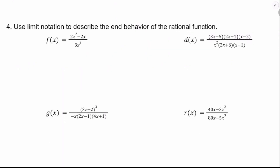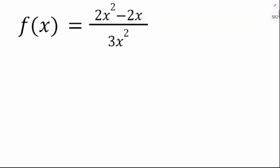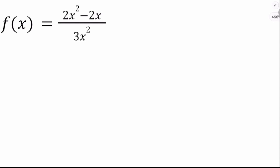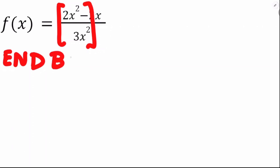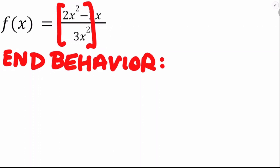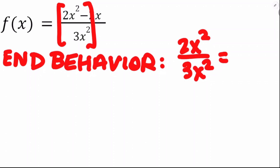Next, we use limit notation to describe the end behavior of the rational function. I'll show you why what we did is legitimate. For f of x equals 2x squared minus 2x over 3x squared, I'm investigating the leading terms: 2x squared over 3x squared. The x squareds cancel and that's 2 thirds. So the limit of f of x as x approaches plus or minus infinity equals 2 thirds.